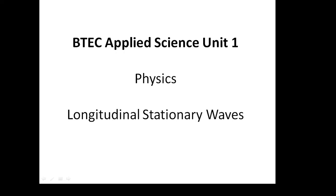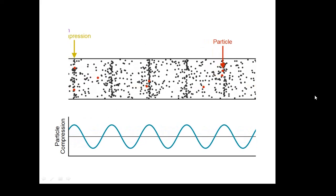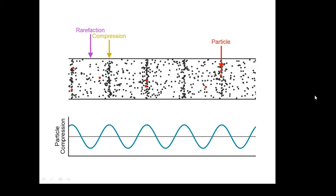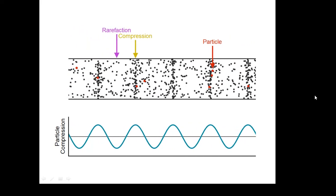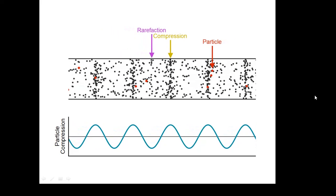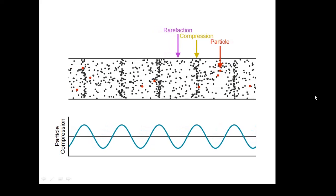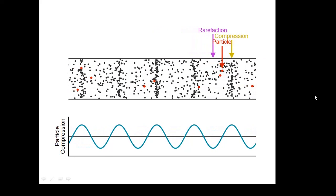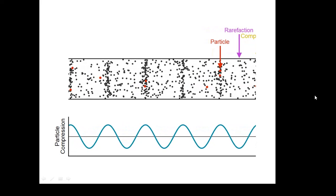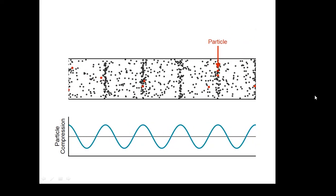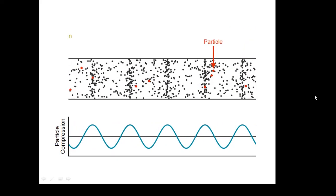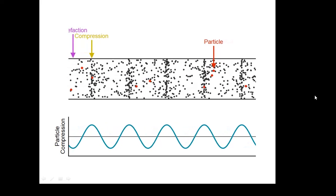I've already done a video about transverse stationary waves, which is what you get on a guitar string. This is about longitudinal stationary waves, which is what you get in pipes and tubes. This isn't a stationary wave — this is a progressive wave, and it is, of course, sound. Looking at this, you can see that there are compressions where the air molecules are close together, and these compressions are traveling from left to right. This is a progressive wave. If you look at any individual particle, you'll see it doesn't actually go anywhere — it's just oscillating, and it's oscillating parallel to the direction that the wave is moving in, which is what happens in a longitudinal wave.